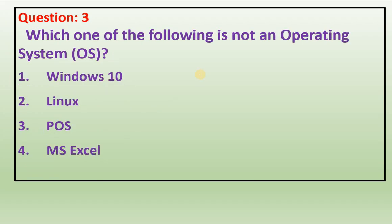Third question: Which one of the following is not an operating system? Windows 10 is an operating system, Linux is an operating system, POS is an operating system. Microsoft Excel is an application software where we do calculations, accounts, and other things.